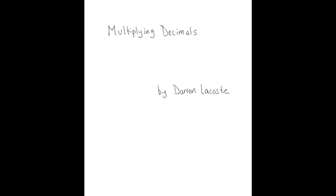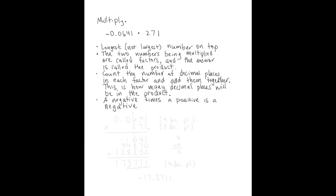The instructions say to multiply. We've got -0.0641 multiplied by 271. When I multiply decimals, I like to put the longest number on the top, not necessarily the number of the largest value, just the one that's longest.